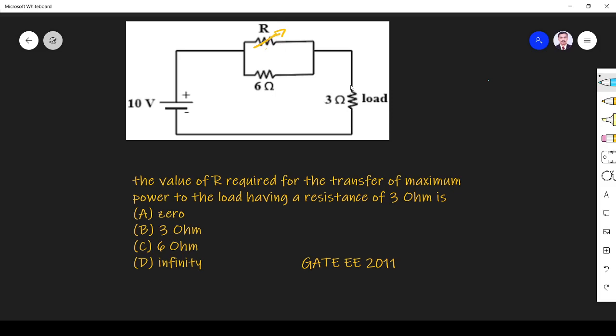So directly you can write the answer immediately. For maximum power transfer, maximum current should flow through the load. When current I is maximum, maximum power is transferred. What should be the resistance value here? If R is equal to zero, total resistance will be zero, so maximum current will flow through the load resistance. So directly we can write the answer is option A: R should be zero.